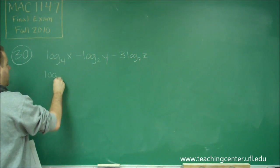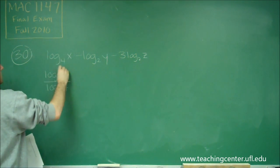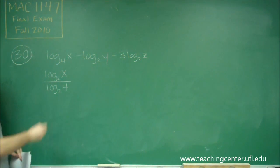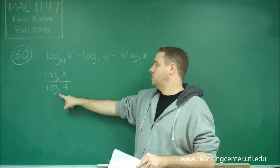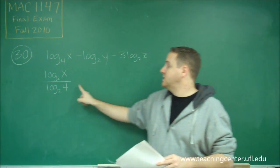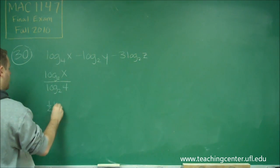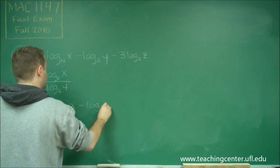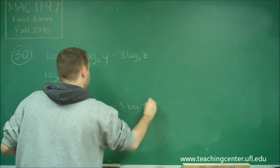So we rewrite log base 4 of x as log base 2 of x over log base 2 of 4, putting the old base on the bottom and the argument on top. We can simplify this because log base 2 of 4 is a nice simple quantity — it's asking 2 to what power is 4, and 2 squared is 4, so it equals 2. This gives us one half log base 2 of x, minus log base 2 of y, minus 3 log base 2 of z.